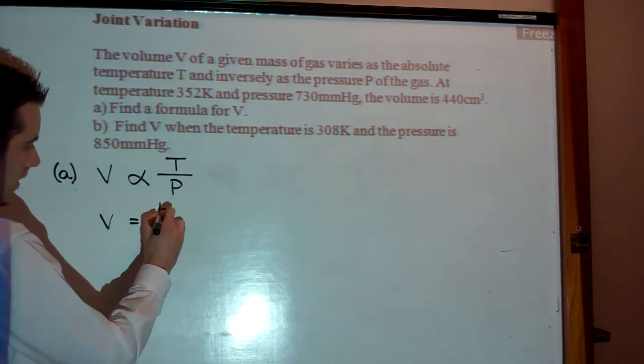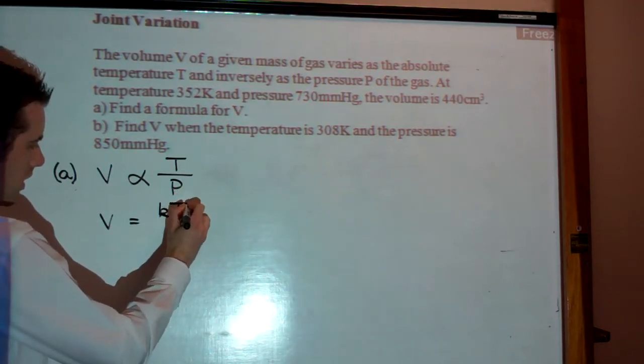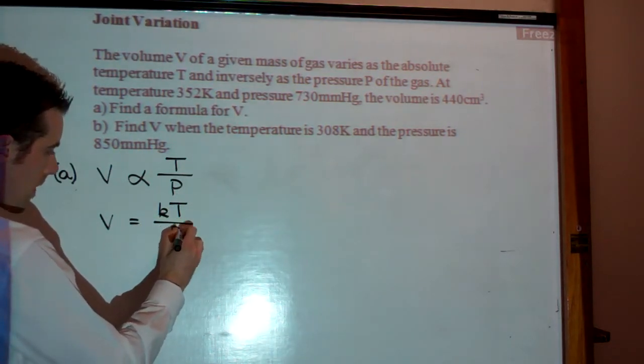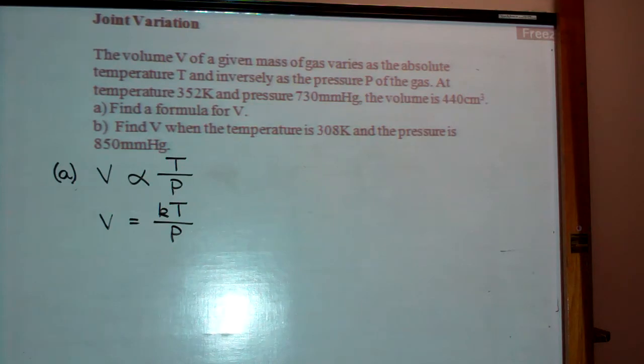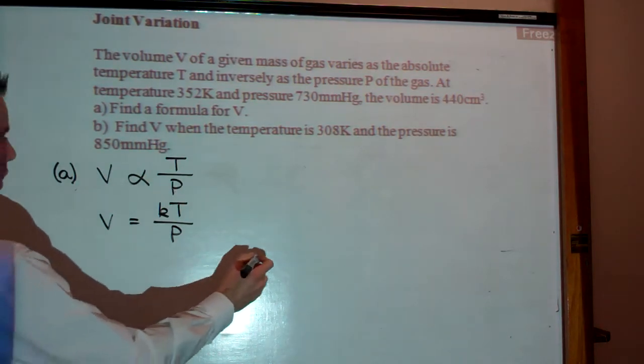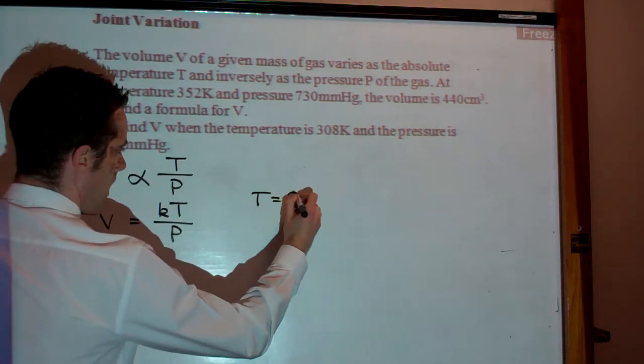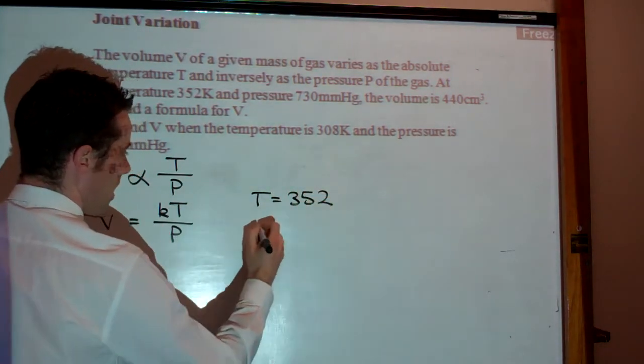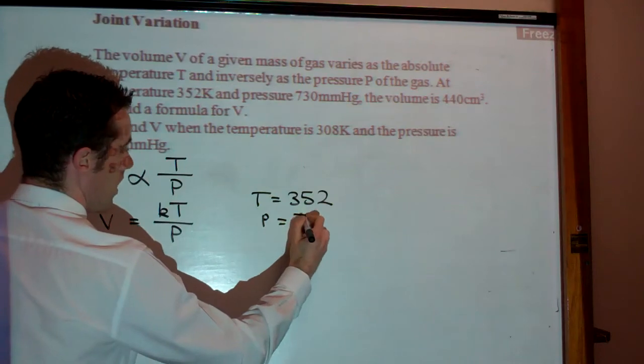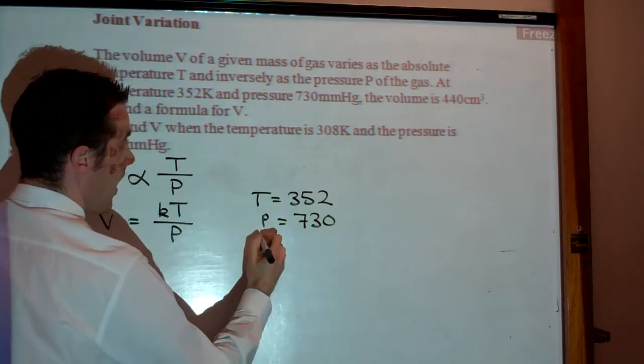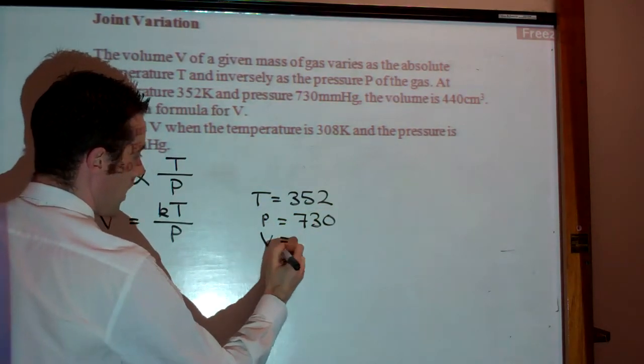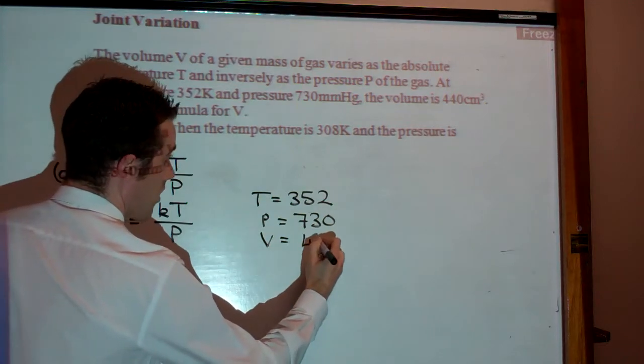And that means V will be a constant times the temperature over pressure, and we now need to find out what that constant is. Alright, so we've got some information. So we've got T is 352, P is 730, and V for a particular mass of gas is 440.